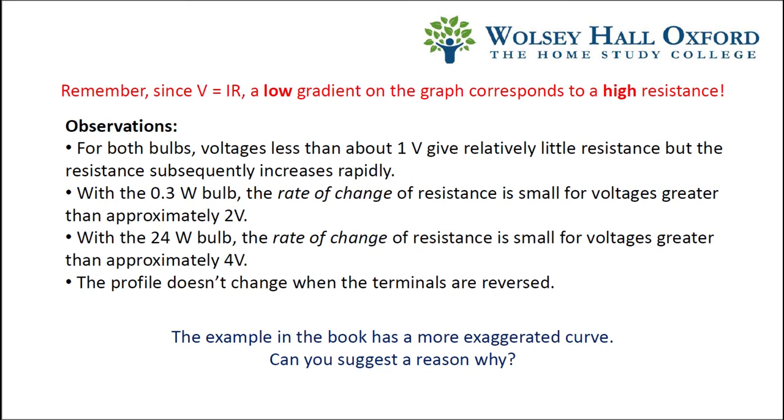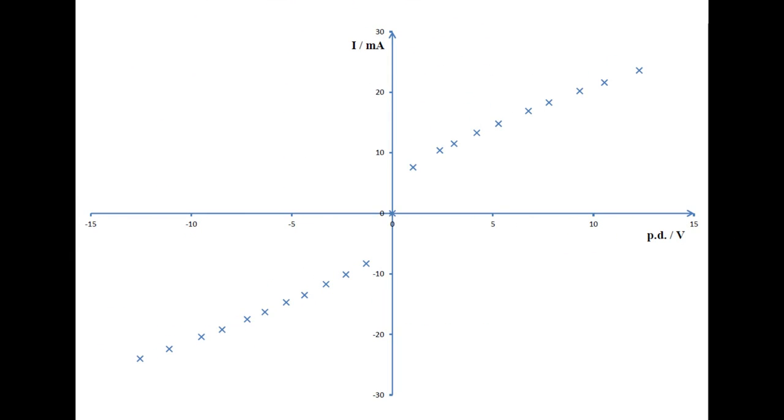For this bulb and for the textbook 24 watt bulb, the resistance increases rapidly while the potential difference is raised above 1 volt. The gradient tends towards a constant value for around 2 to 12 volts.